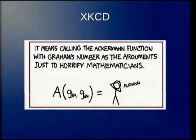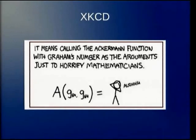There was an XKCD comic a little while back that makes a whole lot more sense if you know what Graham's number is. And A is the Ackermann function. So if you feed Graham's number to the Ackermann function, well, you're going to crash your laptop.